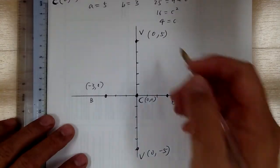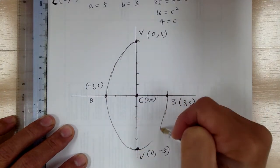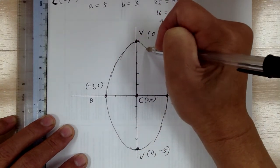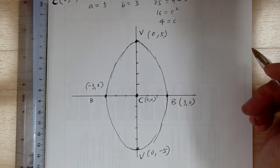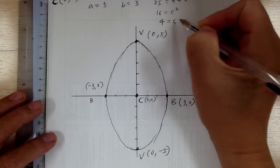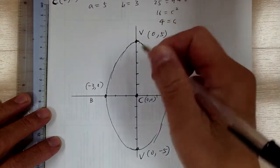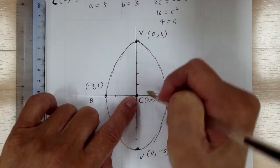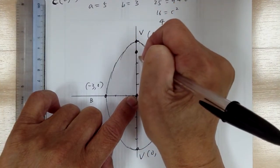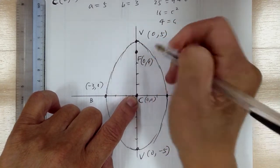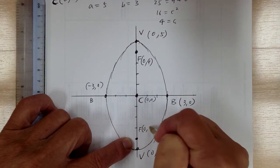Your ellipse is sketched out. Next, you're going to apply this to find the focus. C equals 4, and it's always going along the long direction. Everything starts from the center. So this is F: (0, 4) and (0, -4).